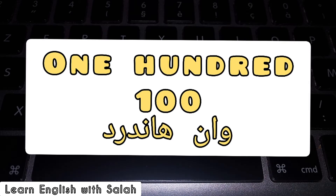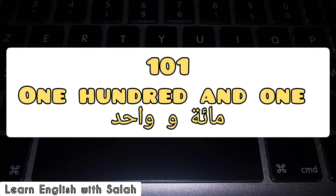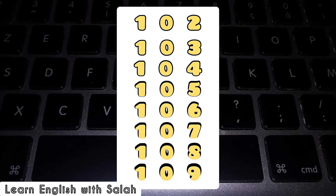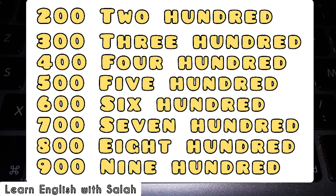100. 101, 102, 103, 104, 105, 106, 107, 108, 109. 200, 300, 400, 500, 600, 700, 800, and 900.